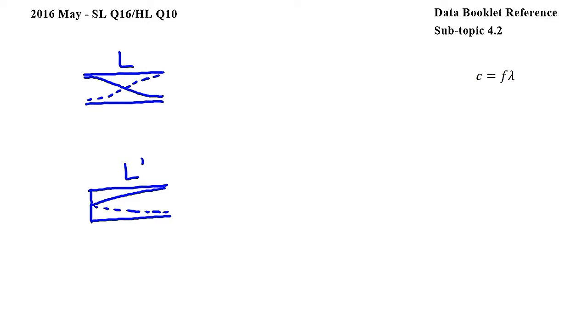In this question we have two pipes, the frequency of their first harmonics is the same and we have to find the ratio of their lengths.